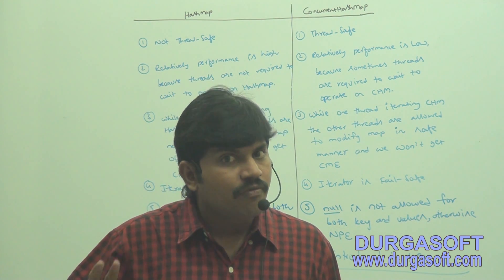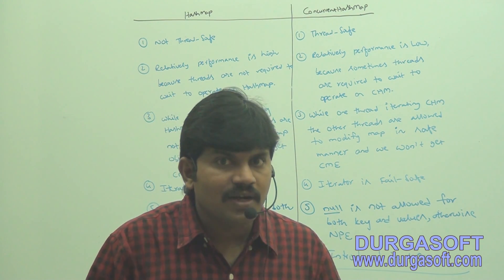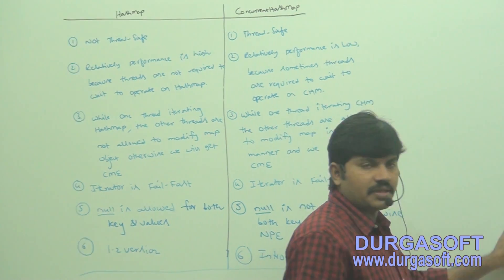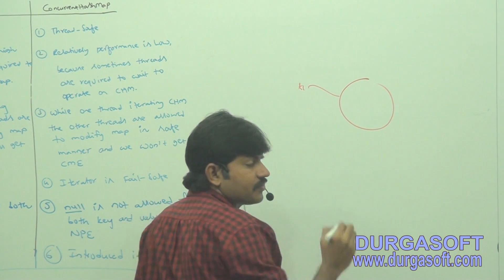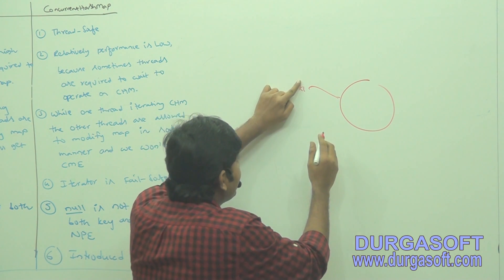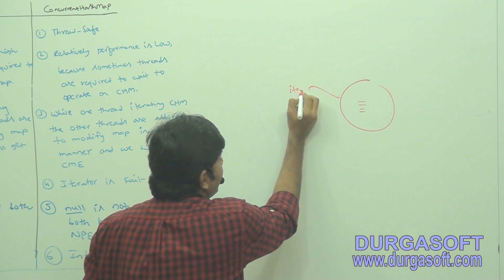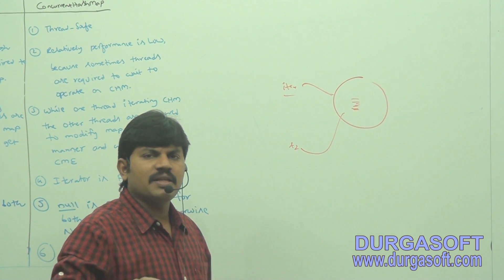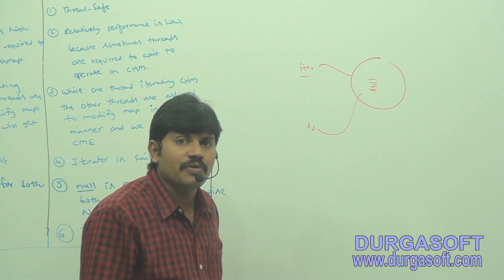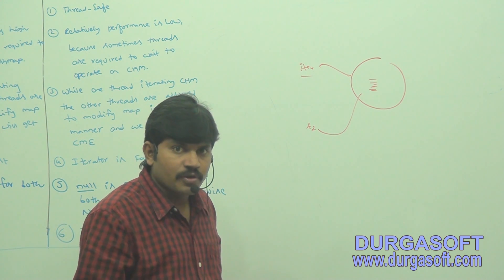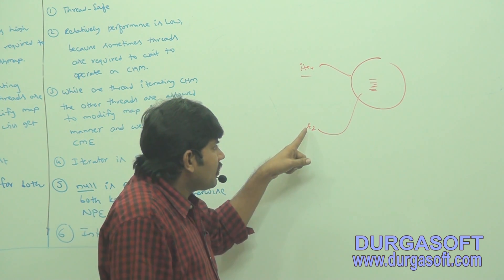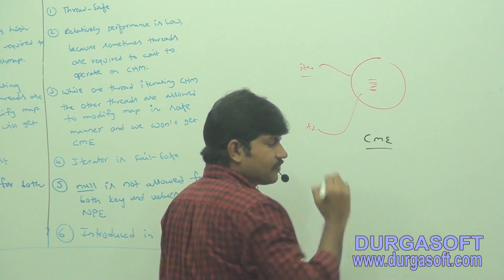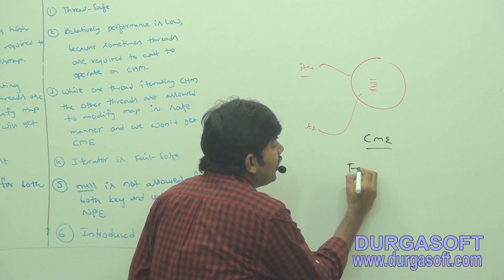The iterator of HashMap is fail-fast, while the iterator of ConcurrentHashMap is fail-safe. Suppose you have one collection object and one thread is iterating it. If another thread tries to perform any update, the iterator fails fast by raising a ConcurrentModificationException. Such iterators are called fail-fast iterators.